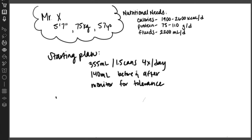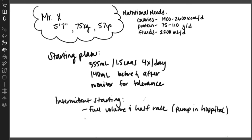To start him on intermittent feedings, there's loose guidelines on how to do that. One way we can do that is by starting with full volume and half rate. Since we're in a hospital, we're going to use a pump for that. When patients get feeding tubes placed in the outpatient setting, they can typically just start a feeding with their syringe or gravity bag and monitor their tolerance to that. For Mr. X, we are going to take that 355 milliliters, that's his one and a half cans, and we are going to run his feeding at 175 milliliters per hour, because that's roughly half of that 355.